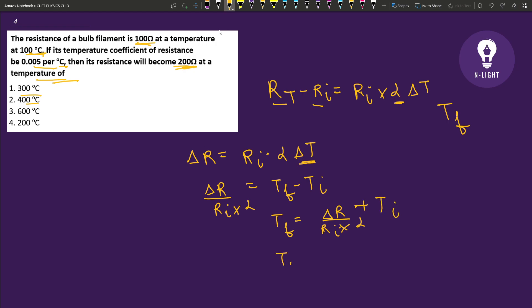Plus initial temperature. Now we solve: the difference is 100 divided by 100, temperature coefficient is 5 times 10 to the power minus 3, plus 100.